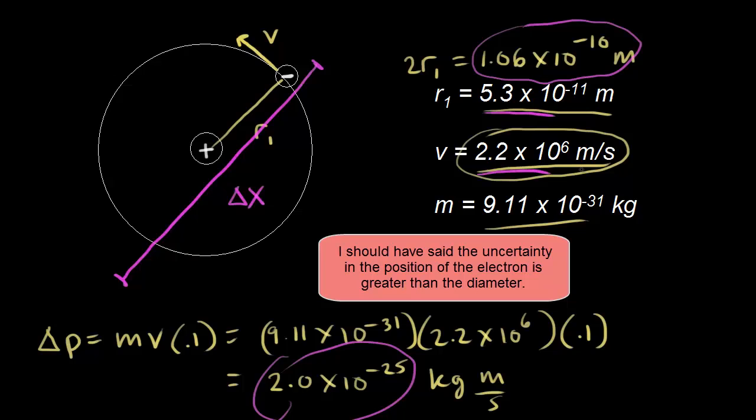This is just one reason why the Bohr model is wrong. But we keep it around because it is useful as a simple model when you're just starting to get into chemistry.